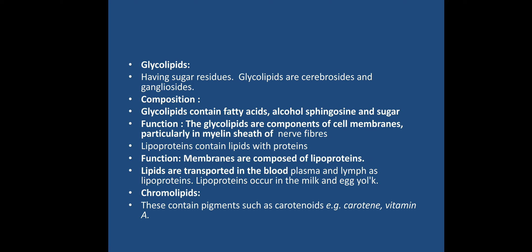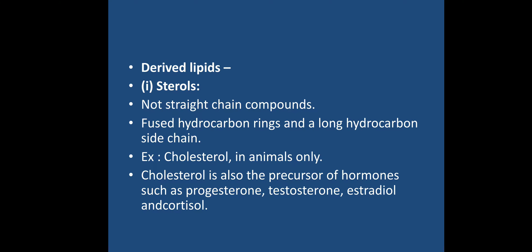Glycolipids contain fatty acids, alcohol, sphingosine, and sugars. They are components of cell membranes, particularly in the myelin sheaths of nerve cells. Lipoproteins occur in milk and egg yolk. Chromolipids are lipids associated with pigments, such as carotenoids and vitamins.